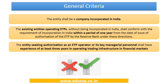Under the general criteria, the entity shall be a company incorporated in India. Existing entities operating electronic trading platforms without being incorporated in India will also have to comply with this requirement and will have to get themselves incorporated in India within a period of one year from the date of issue of authorization of the ETP by the RBI. Further, the entity seeking authorization as an ETP operator, or its key managerial person, should have at least three years of experience in operating trading infrastructure in financial markets.